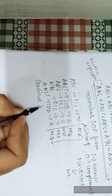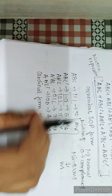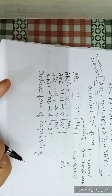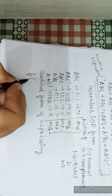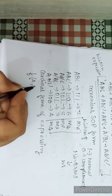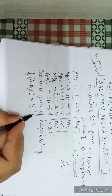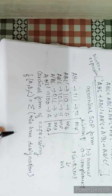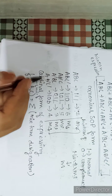Now, the cardinal form of a min term expression is expressing the min terms in the form of numbers. To represent it, we write F followed by all variables used, then sigma, then the min term designation numbers. For example, for variables A, B, C, the general form is F(A,B,C) = sigma(min term designations).